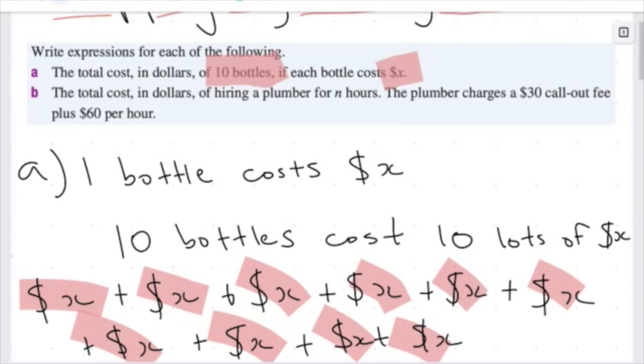Now let's look at question 2. The total cost in dollars of hiring... We want to find an expression for the total cost in dollars of hiring a plumber for N hours. Okay, so that's an important thing. This is our pronumeral, our unknown. Now a plumber charges a $30 call-out fee. So this means that this is a price that's outside of the number of hours worked. This is a slightly wordier question, and we're going to take this quite slowly.